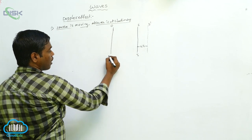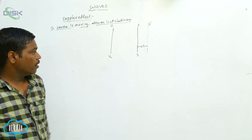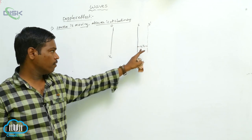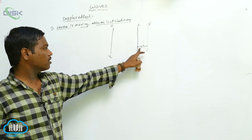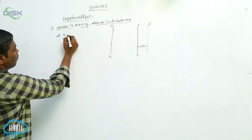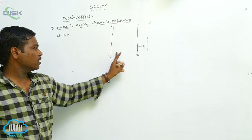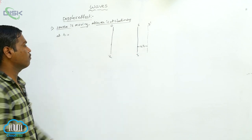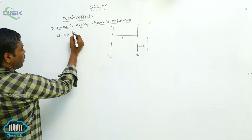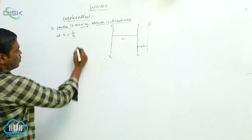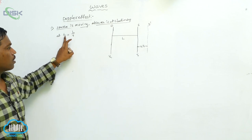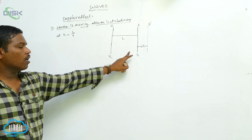The observer speed is V0. When the source produces a crest — that is, it produces sound consisting of crests and troughs — that crest reaches the observer. The time for the first crest to reach the observer is T1, and the distance from observer to source is taken as L. So T1 is equal to L divided by V, where L by V is distance over speed.